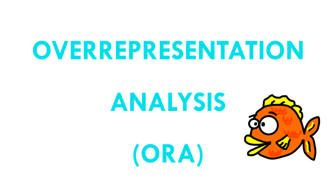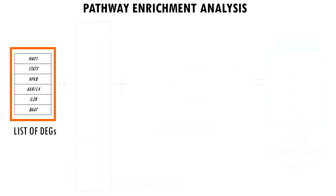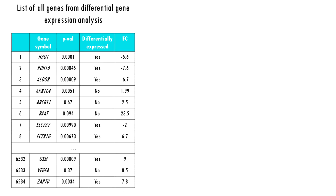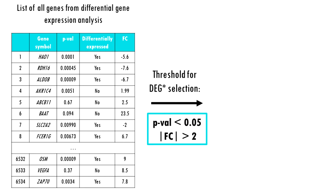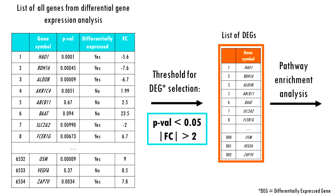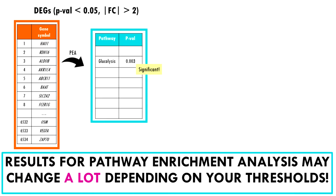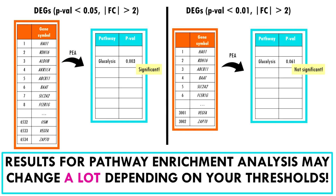These approaches are known as over-representation analysis. But the problem is that we first need to select differentially expressed genes. Traditionally we use thresholds of fold change greater than 2 or less than -2, and p-values lower than 0.05. But what if a gene had a fold change of 1.99 and a p-value of 0.051? They are still important genes to consider, and removing them can modify the results a lot — especially if you have few differentially expressed genes to start with.